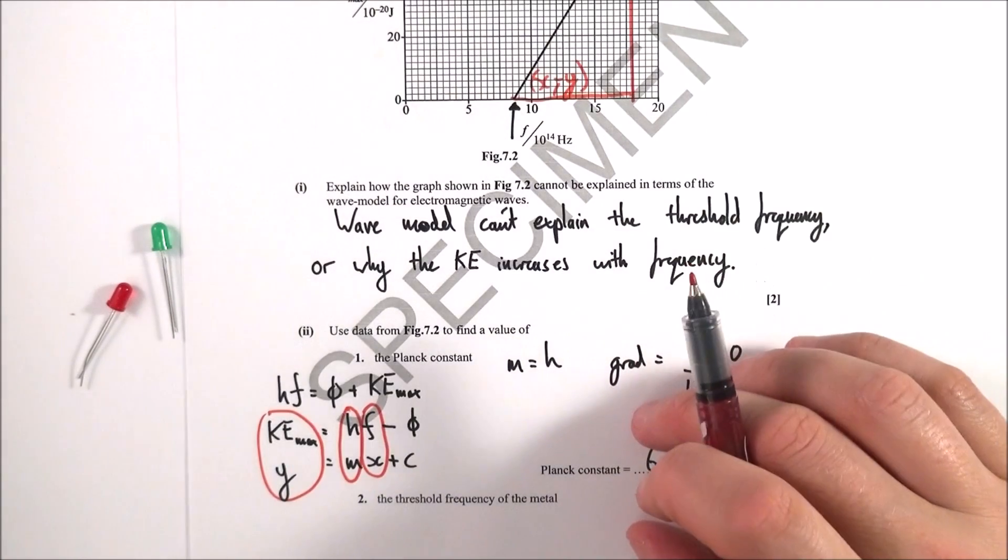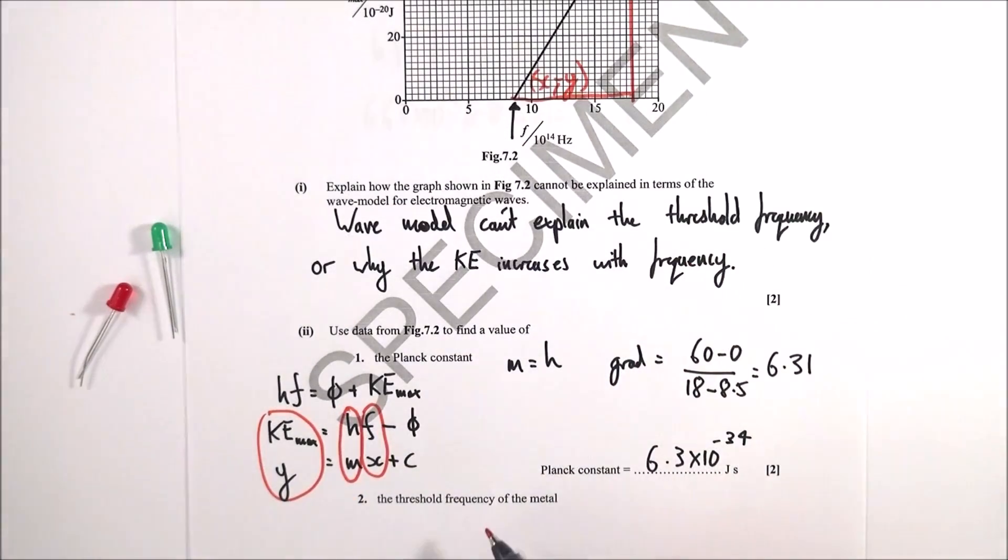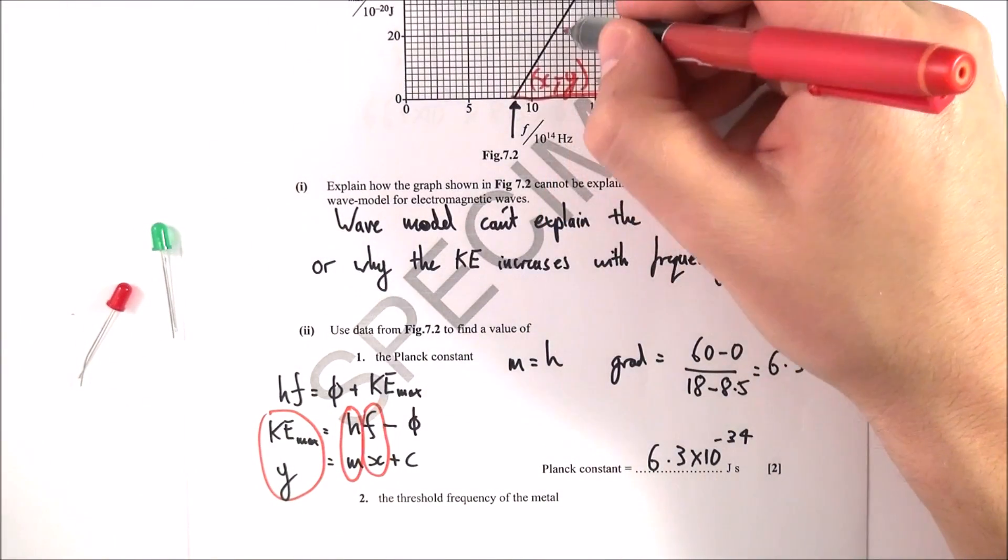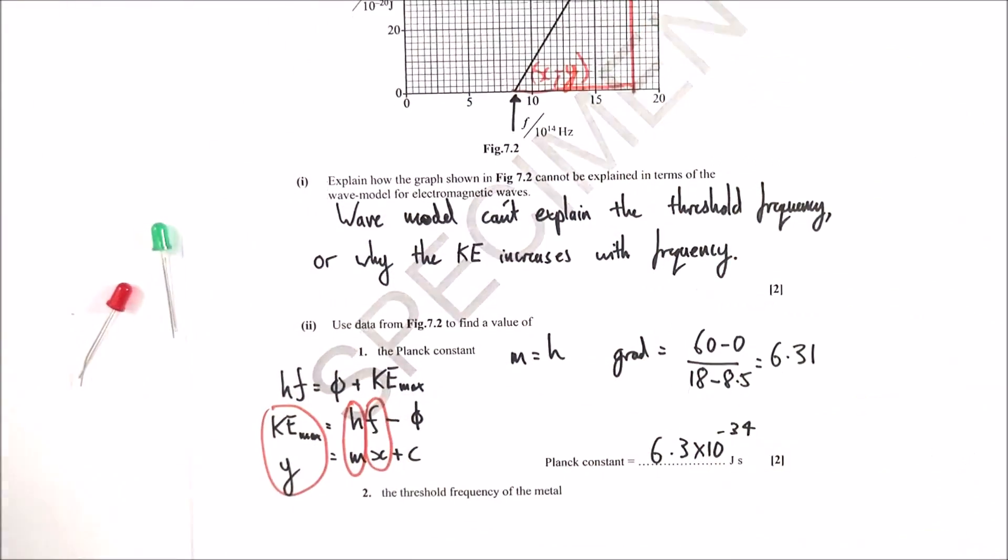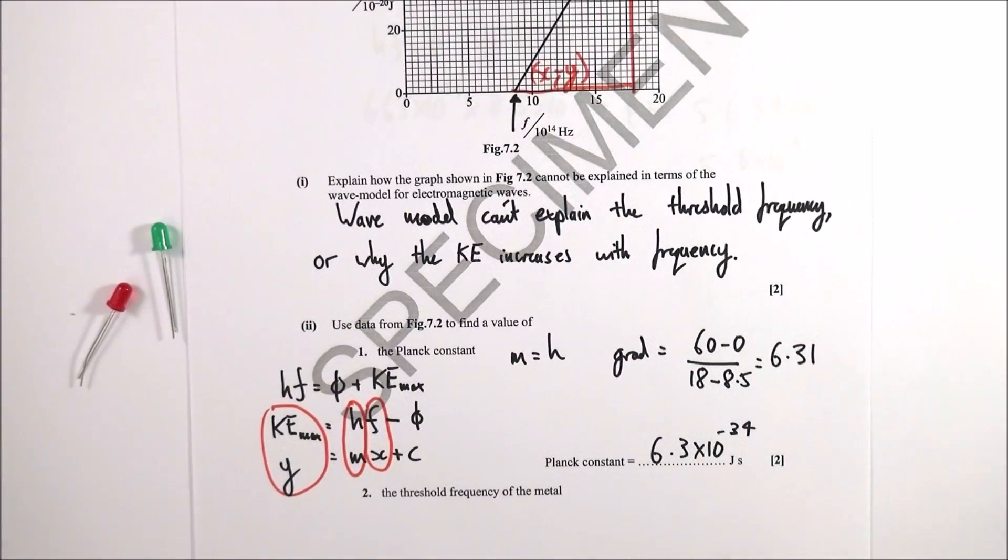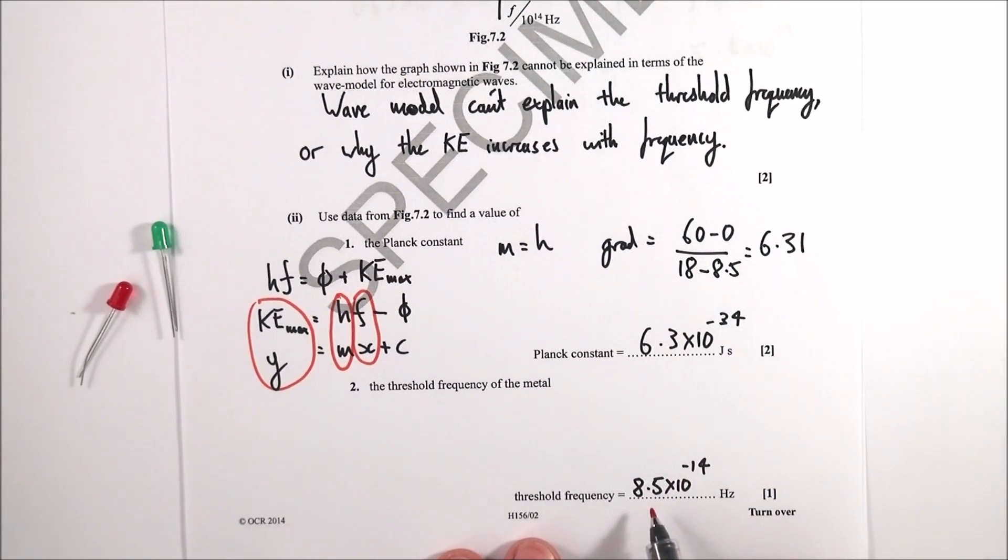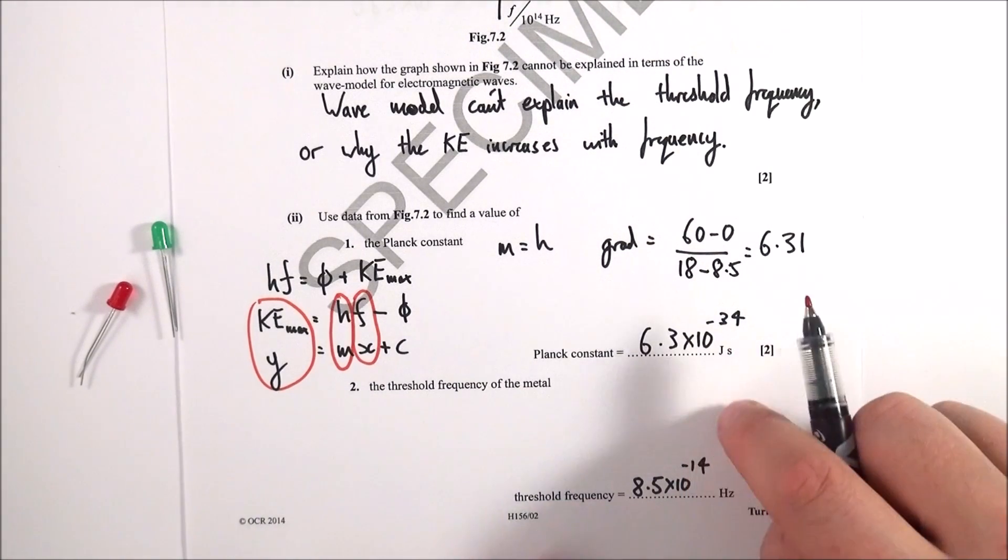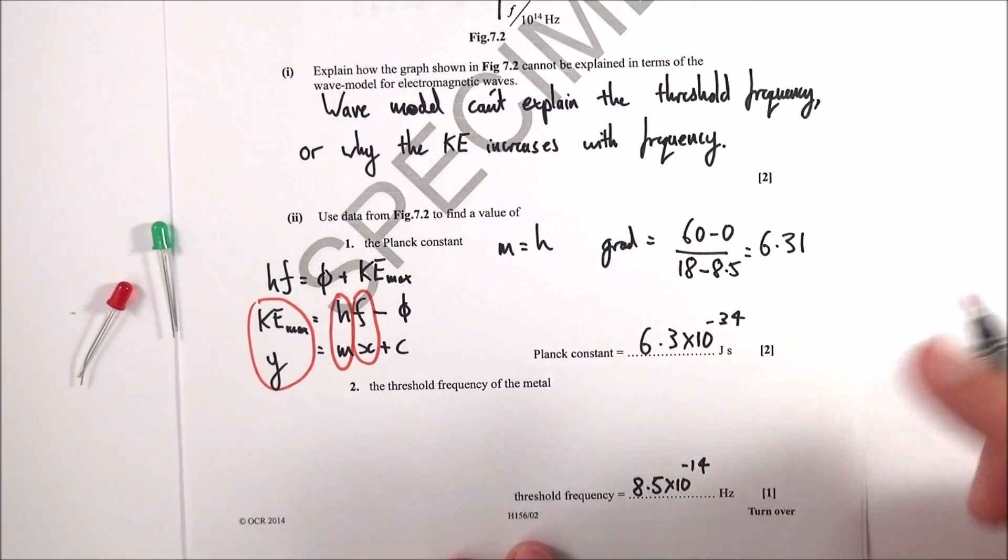Which is close enough to what the real value should be - you can check in your data book. The next bit: what is the threshold frequency? That's basically the frequency at which photoelectrons are emitted. Read off the graph and the answer is 8.5 times 10 to the 14. So one of the later questions, often seen as the hardest question, is actually really easy - it's just reading it off the graph.